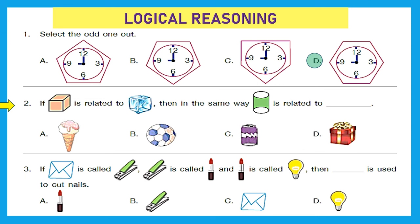Question 2: if this figure is related to a cube, and a cube is related to ice, then in the same way, a cylinder is related to — very easy — option C.